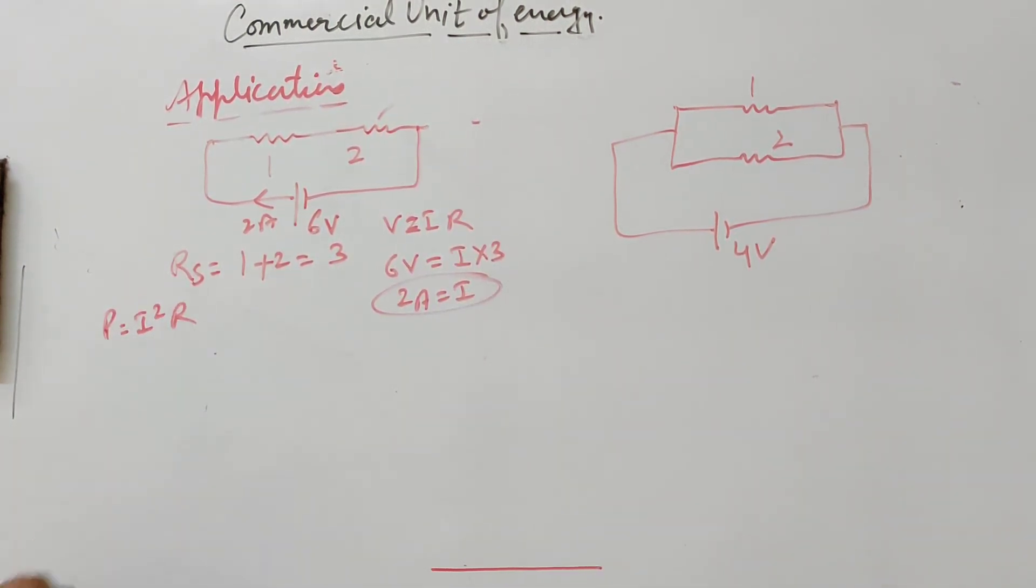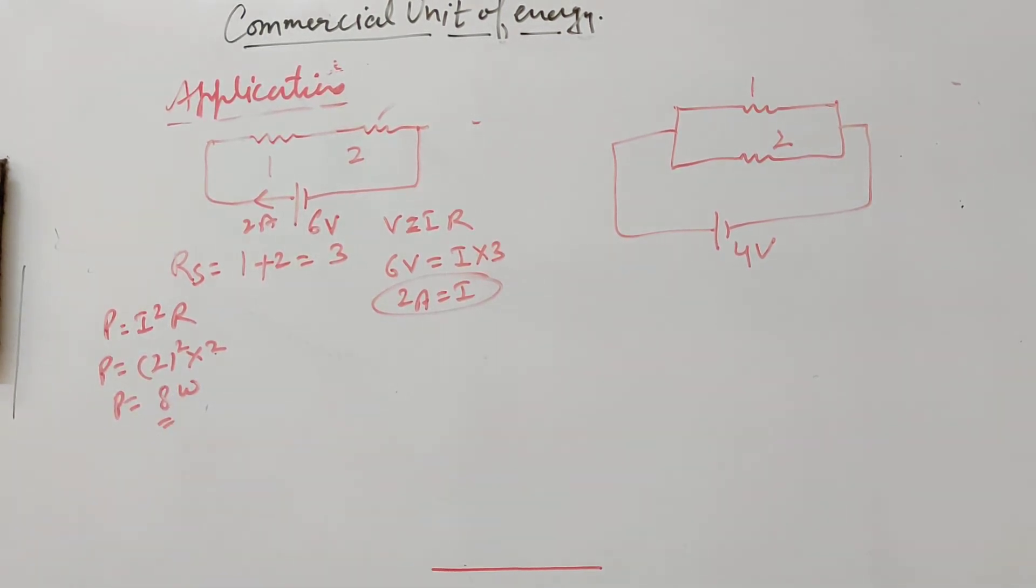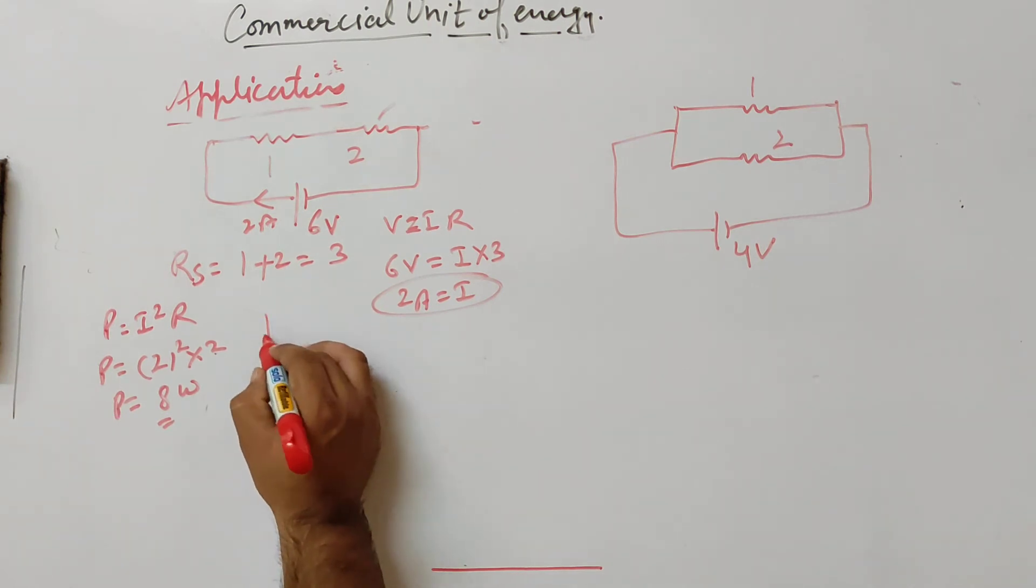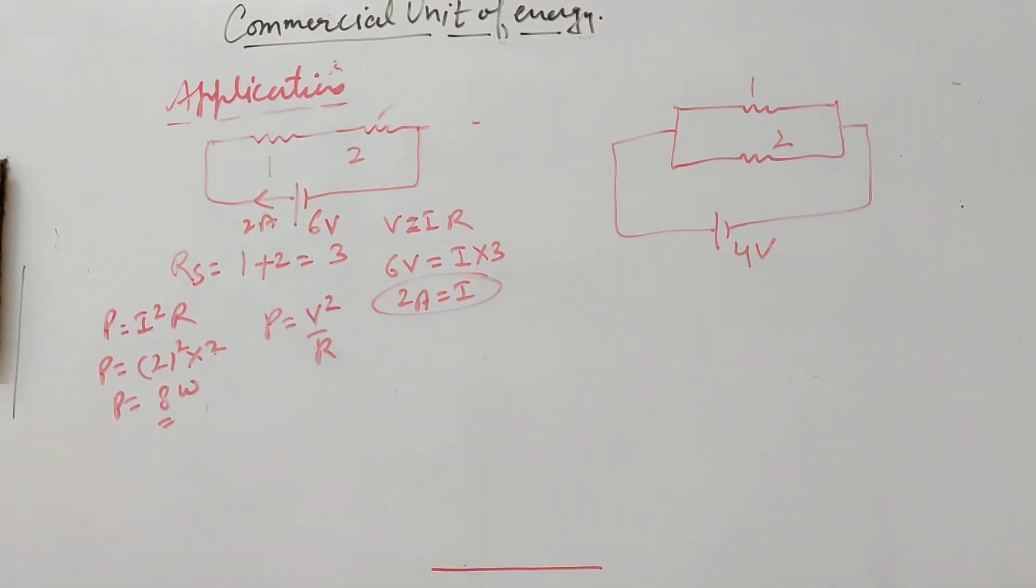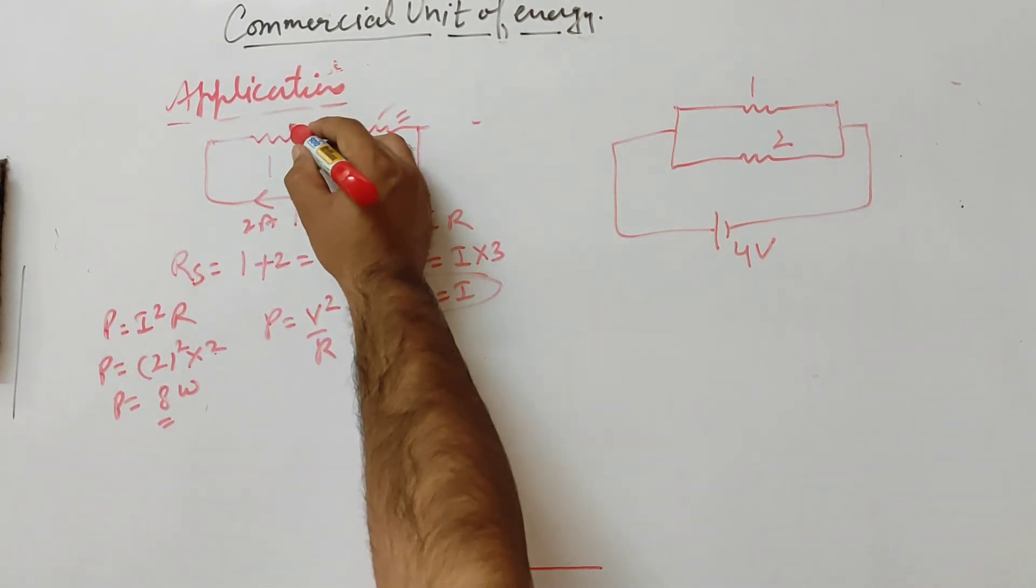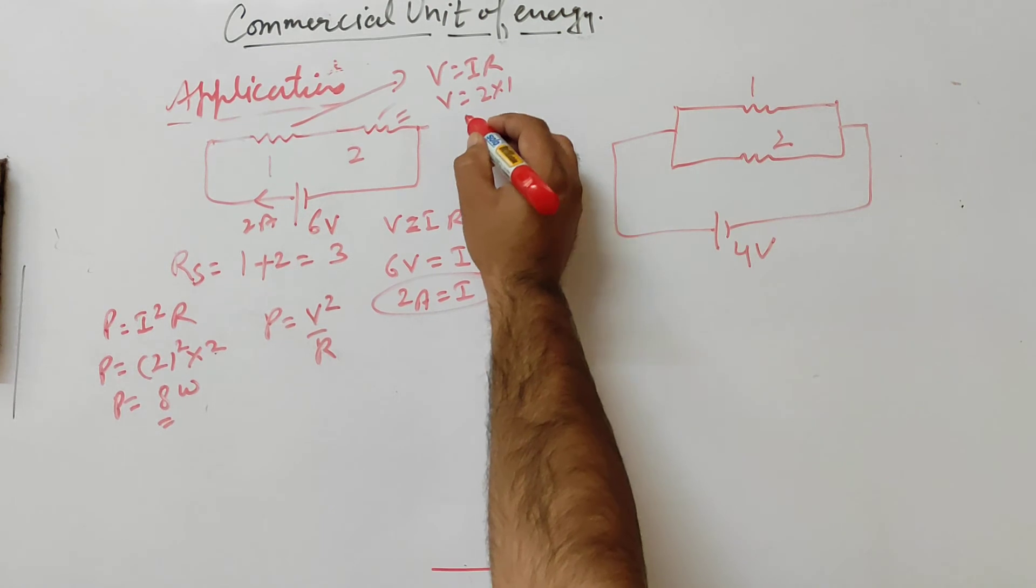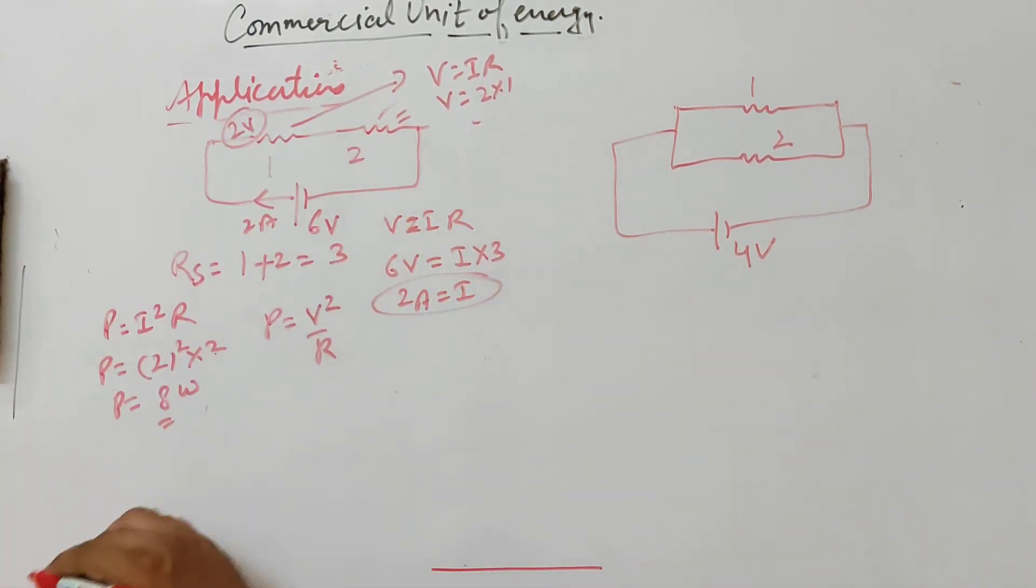We can use two methods. Power is I square R. I is 2, so 2 squared times 2 gives power 8 watts. Or use V square by R method. Total voltage is 6V. V equals IR, I is 2, R is 2, so voltage across 2 ohm is 4V. Power is 4 squared by 2 equals 8 watts. Any method gives 8 watts.